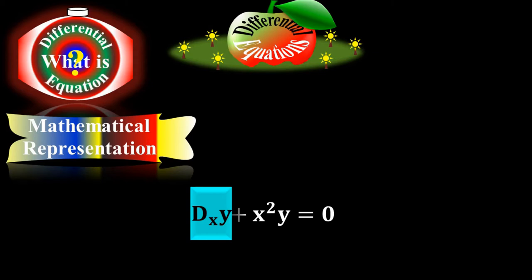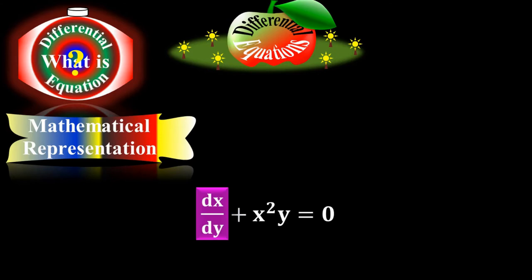You can use any notation for the derivative term. y is a dependent variable and x is an independent variable in this equation, but you may have equations where x is dependent and y is independent. It's up to you.